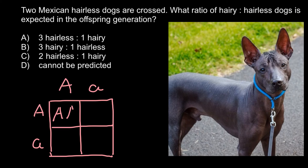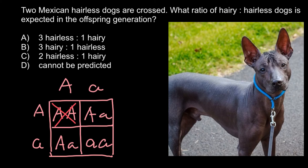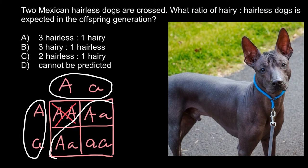In our Punnett square we would have: capital A capital A, capital A small a, capital A small a, and small a small a. However, the dominant allele is also a lethal allele — the homozygous dominant genotype (AA) can never be found because it leads to stillbirth. So if we cross two hairless dogs, the ratio in the F1 generation would be 2 hairless dogs to 1 hairy, giving a 2-to-1 ratio.